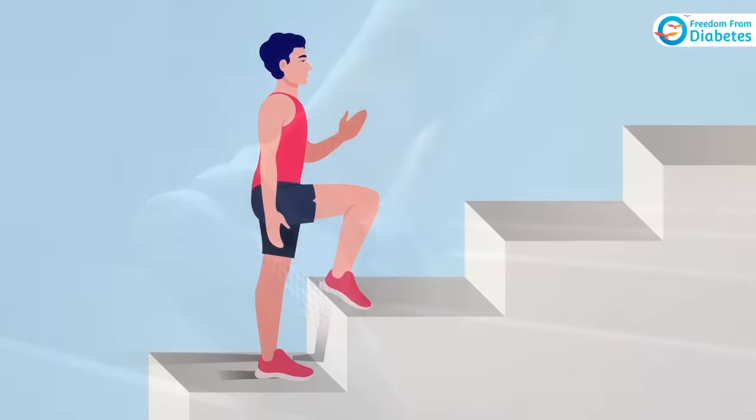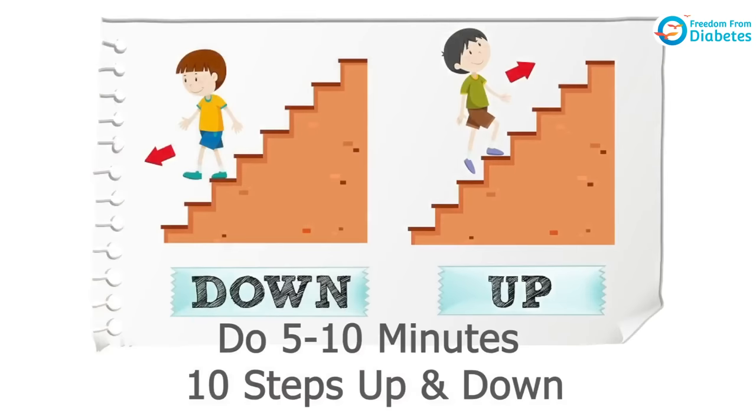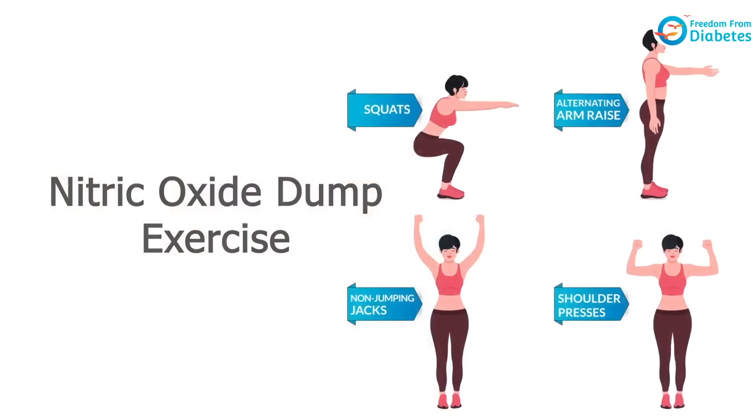Along with yoga, ensure you do some anti-gravity work. When you go up and down steps, your cells start pulling glucose into them even without insulin — that's the power of anti-gravity exercise. About one hour 45 minutes to two hours after every meal, try five to ten minutes of going up and down steps repeatedly. Also add the nitric oxide dump exercise for the upper body — a series of arm movements that are very effective.